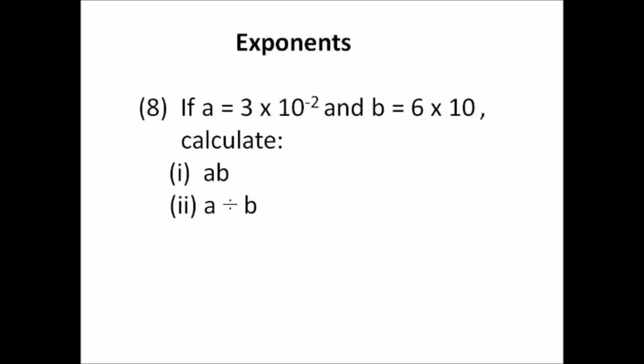Number eight: exponents. If a equals 3 times 10 to the negative two, and b equals 6 times 10, calculate: 1) a times b; 2) a divided by b. When multiplying or dividing with exponents, there are rules to follow. If unsure, just use your calculator — write out 3 times 10 to the negative two as a number, then 6 times 10 as a number, and multiply or divide. I'll show both ways at the end.